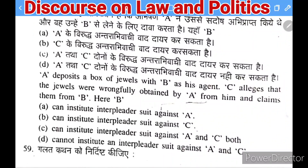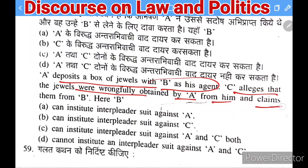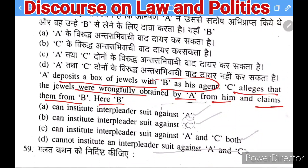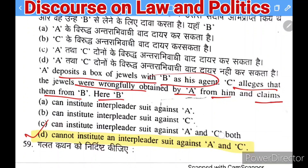Next question: A deposits a box of jewels with B as his agent. C alleges the jewels were wrongly obtained by A from him and claims them from B. B can — institute an interpleader suit, institute against C, institute against A and C both, or cannot institute. The right answer is that B cannot institute an interpleader suit against both A and C in this situation.